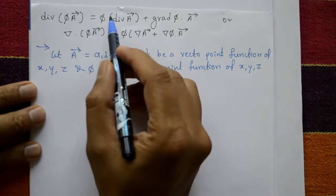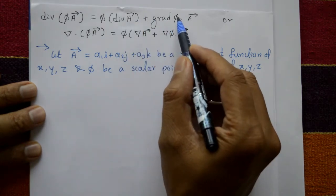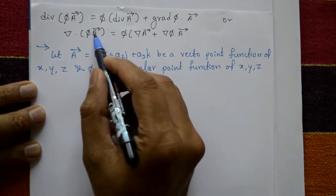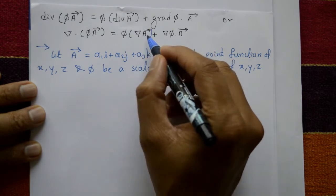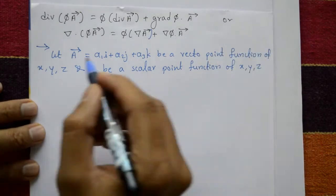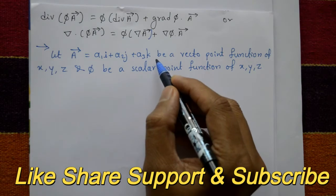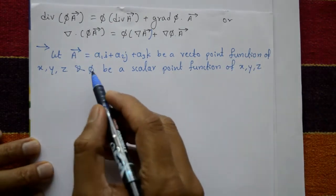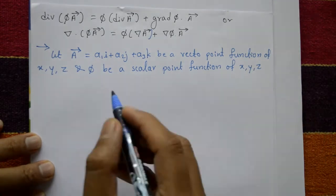The divergence of φ**A** is equal to φ(∇·**A**) plus (∇φ)·**A**. That is, del dot (φ**A**) equals φ(del·**A**) plus (del φ)·**A**. Let vector **A** = A₁i + A₂j + A₃k be a vector point function of x, y, z, and let φ be a scalar point function of x, y, z.